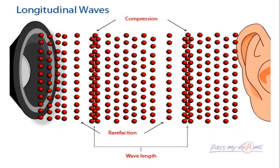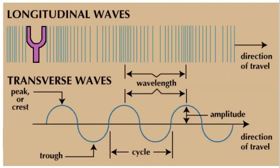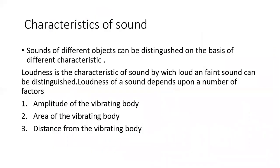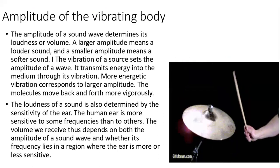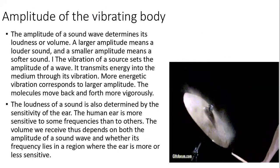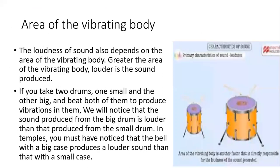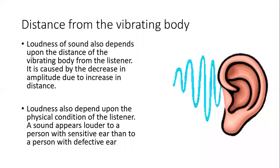This diagram shows compression and rarefaction. Another diagram explains amplitude and wavelength. First, loudness — by which a loud and faint sound can be distinguished. Loudness depends upon the amplitude of the vibrating body, the area of the vibrating body, and the distance between the vibrating body and the listener. More amplitude means louder sound, more area means louder sound, less distance means louder sound.